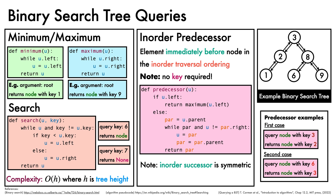The in-order successor function is symmetric to the predecessor function, so we won't step through it in detail. As with minimum, maximum, and search, since we are only going down the tree in case 1, or only going up the tree in case 2, the complexity is also big O of h, the height of the tree.